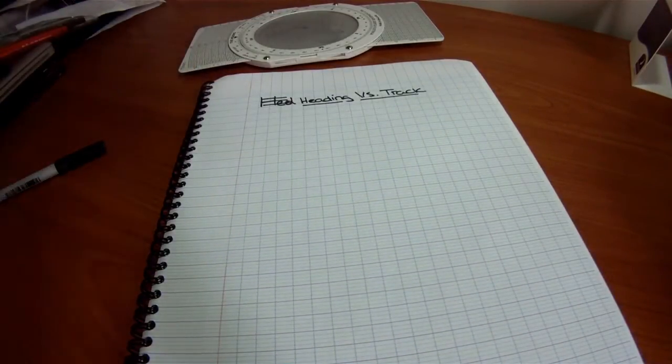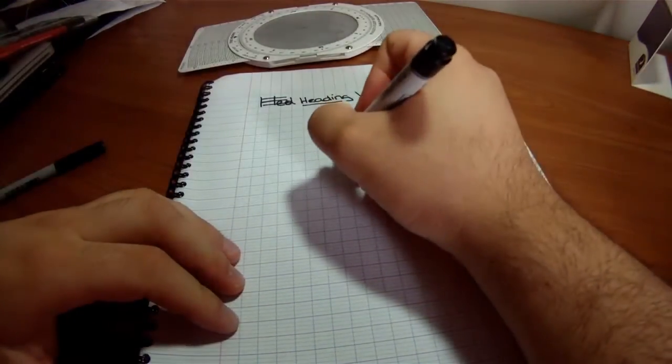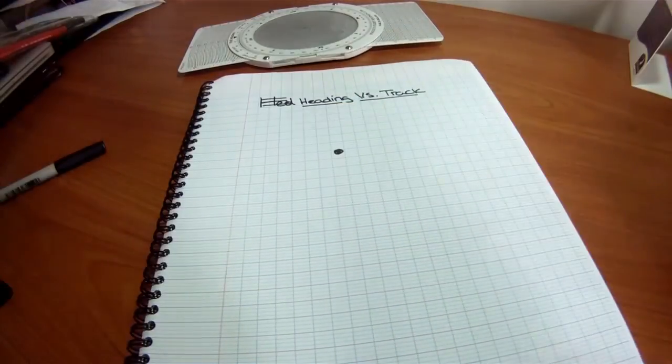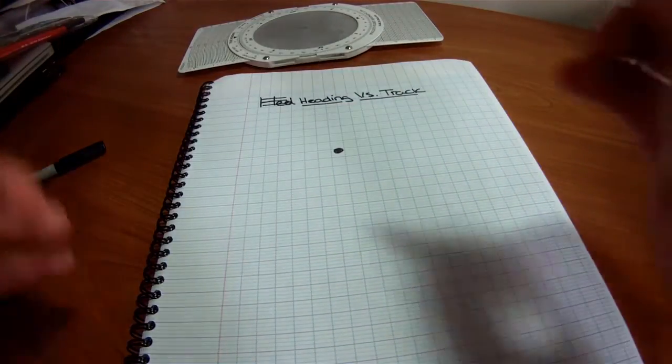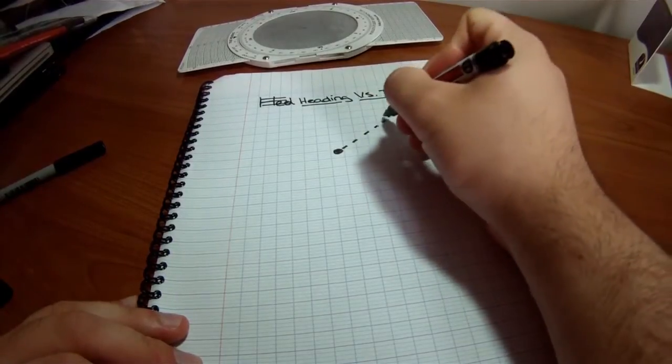First, difference between track and heading. For those who don't know this, let's take a point in mass. It's going to travel in a certain direction, like this. It is now traveling in this direction.